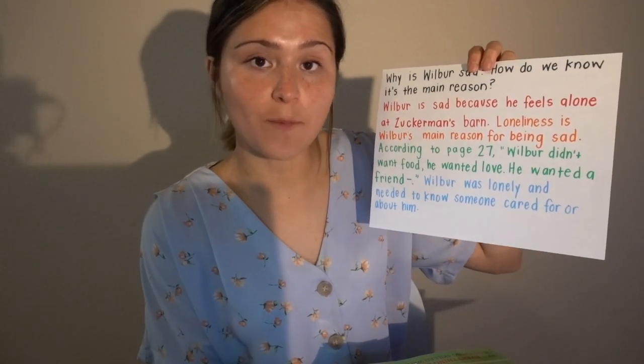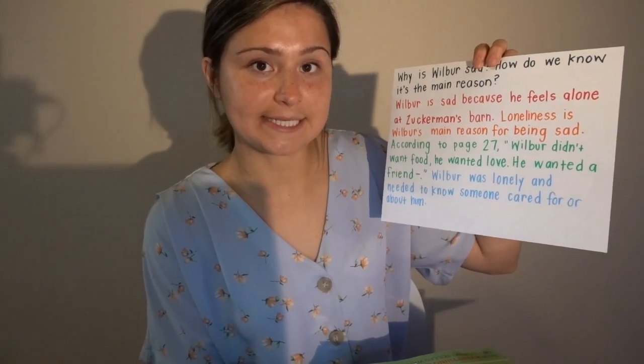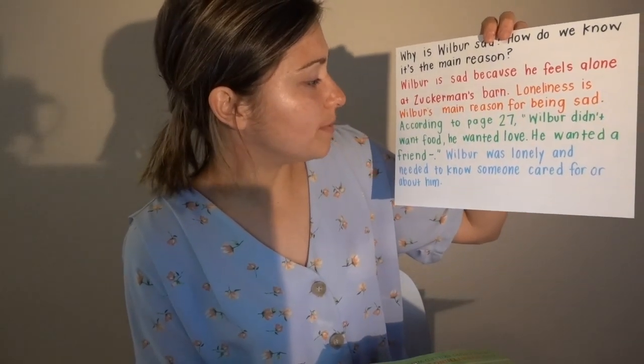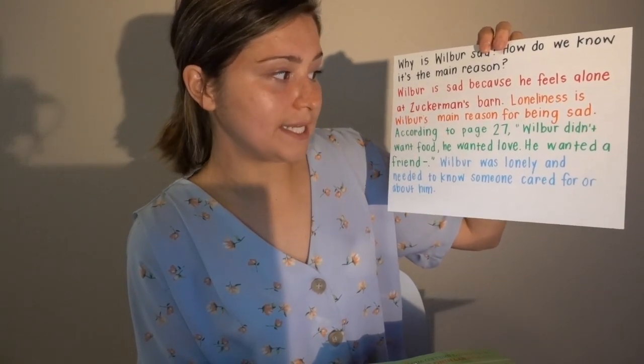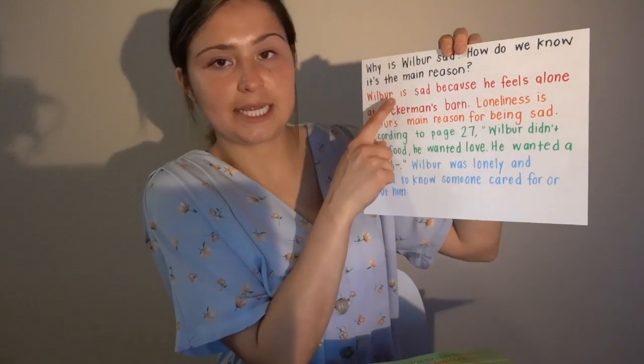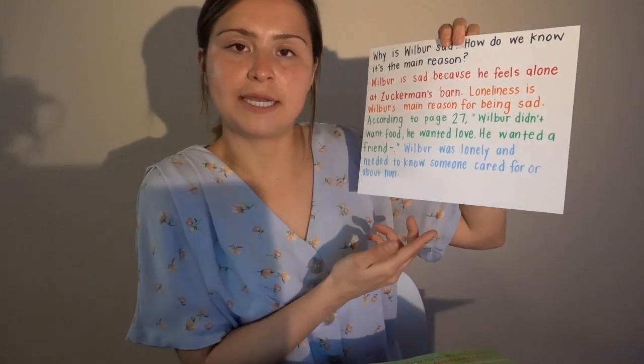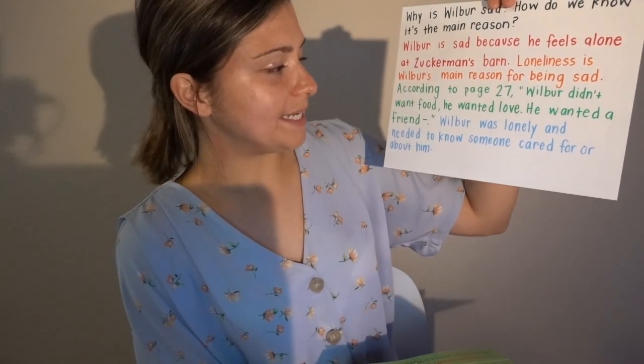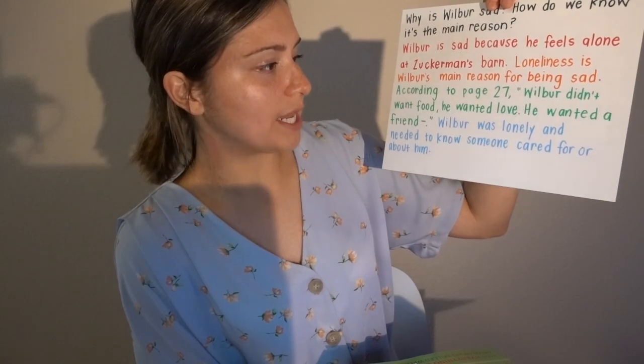The next thing I had to do was go back to my text and cite evidence. I wrote: according to page 27, Wilbur didn't want food. He wanted love. He wanted a friend. The last step is to summarize our information — that's like restating the question, but in a different way. Wilbur was lonely and needed to know someone cared for or about him.